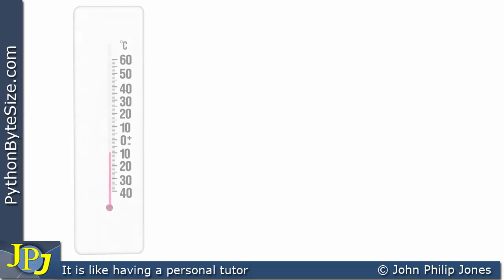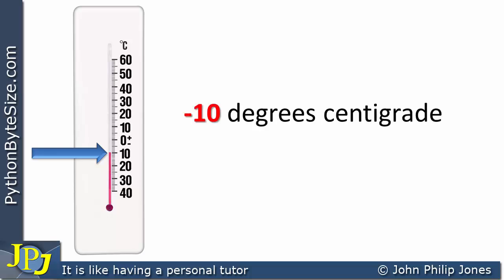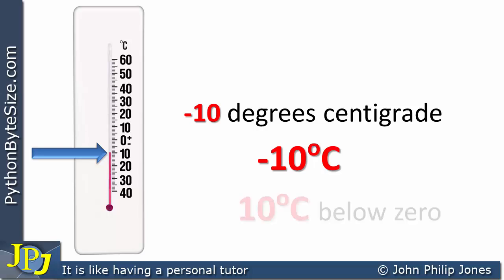If we have a look at another reading from a thermometer, we can see it's at minus 10 degrees C because it is below zero on the scale. We can write that down as minus 10 degrees centigrade, or minus 10 degrees C. Another way of doing this is not to include the minus sign and actually say 10 degrees C below zero.